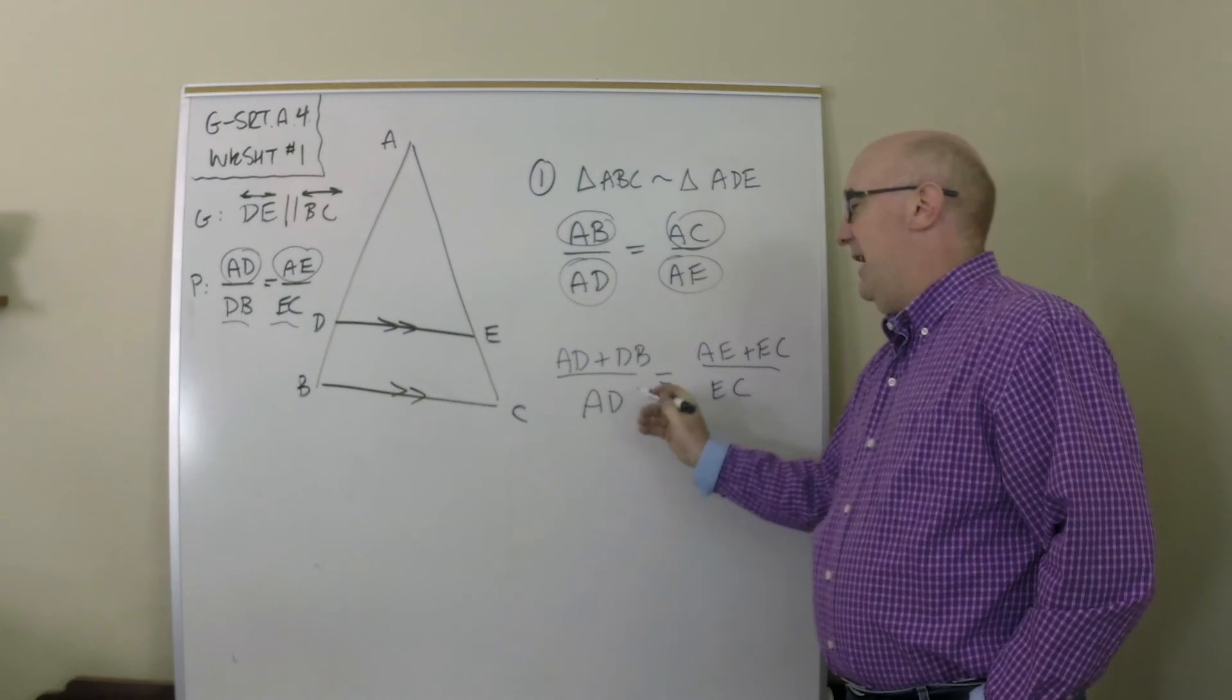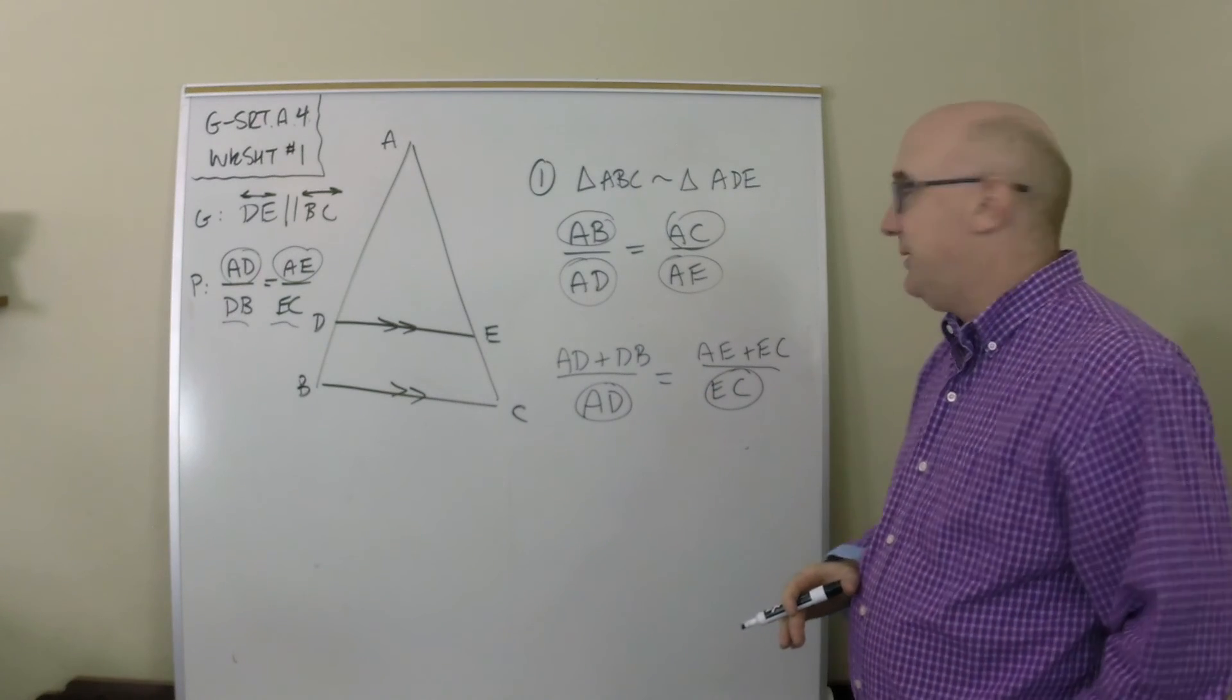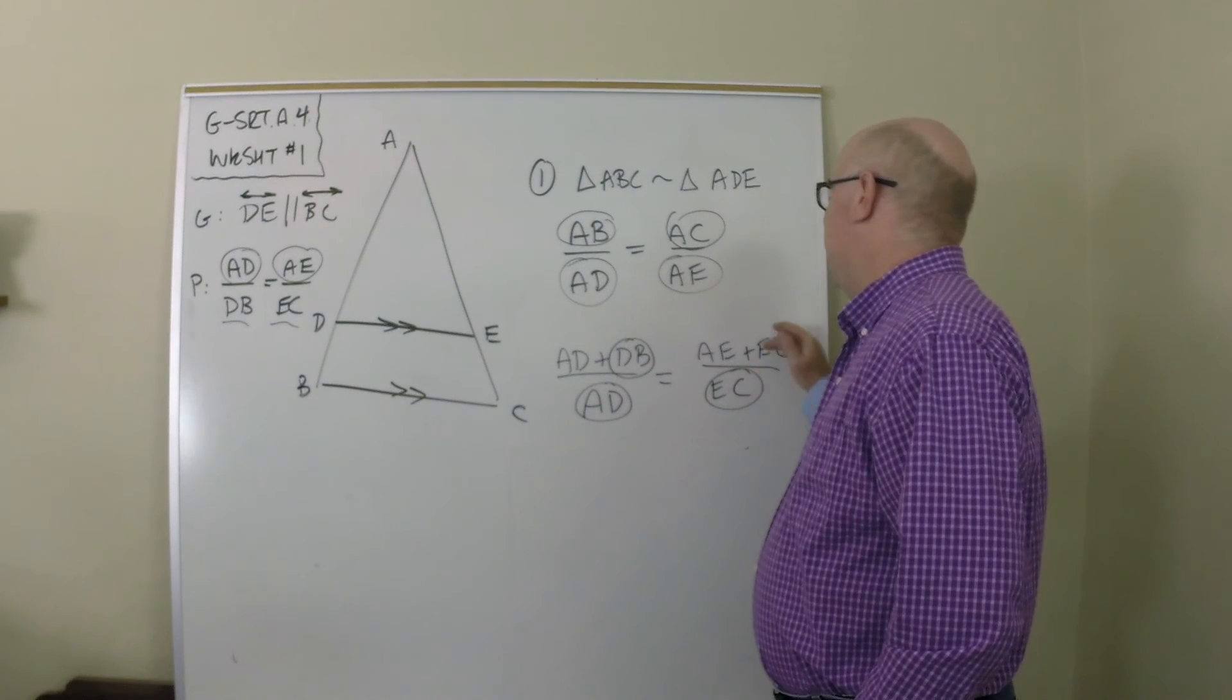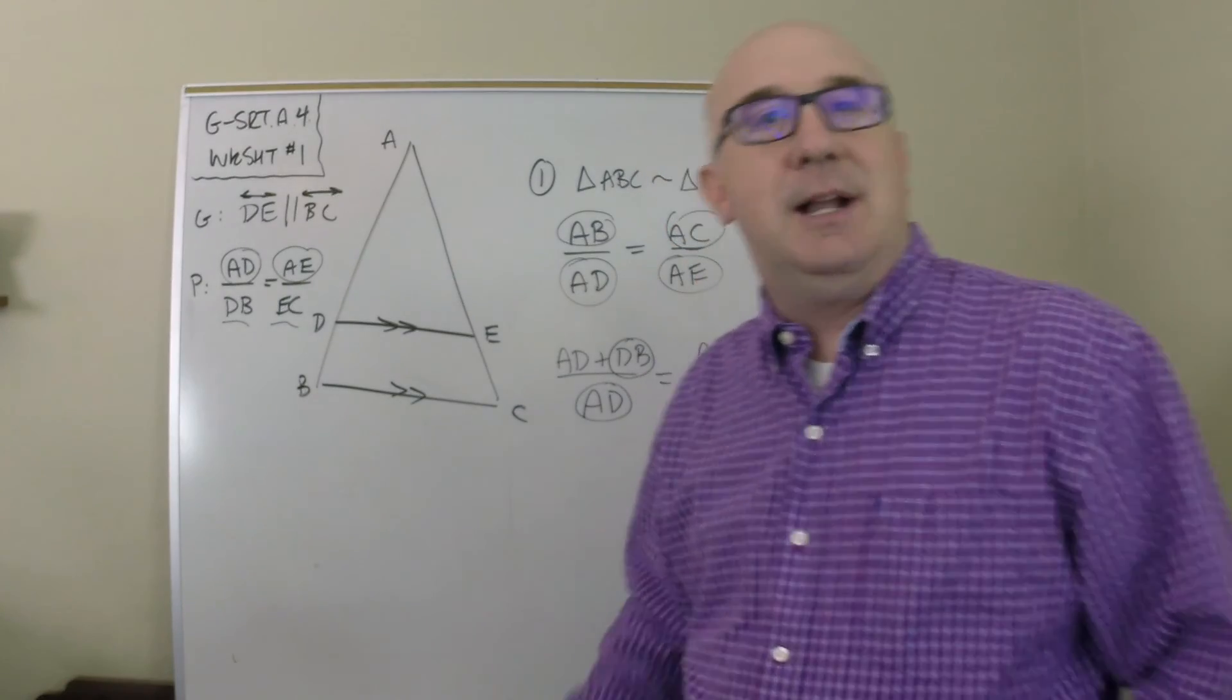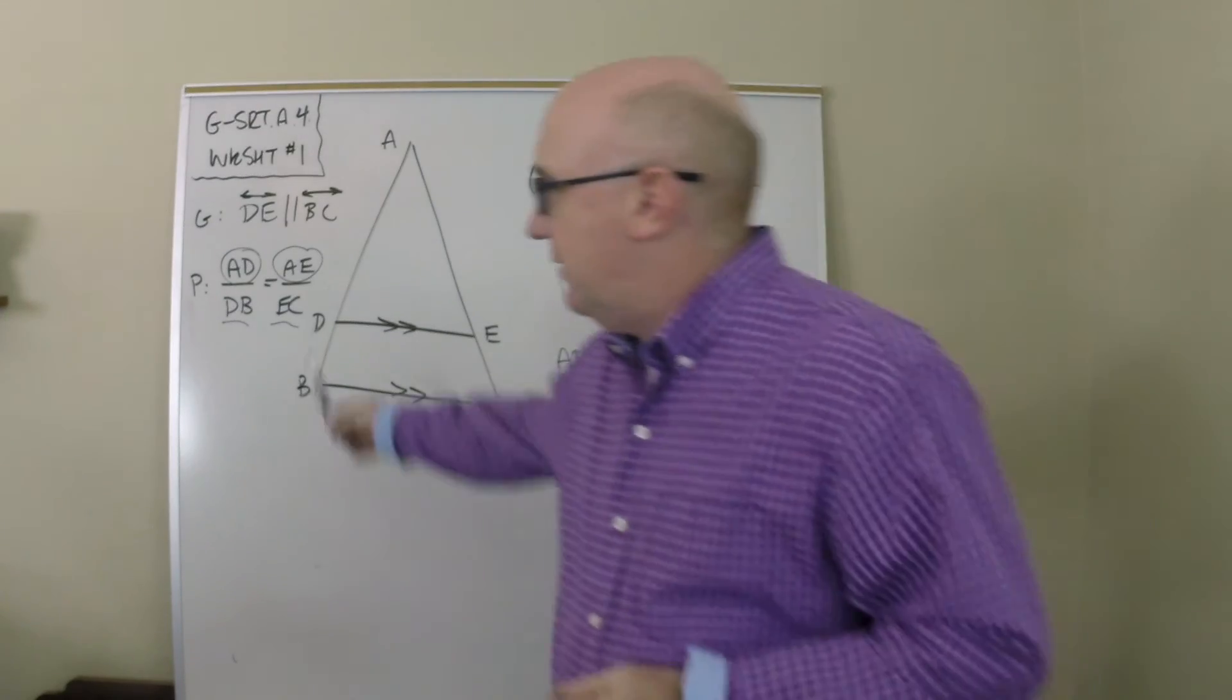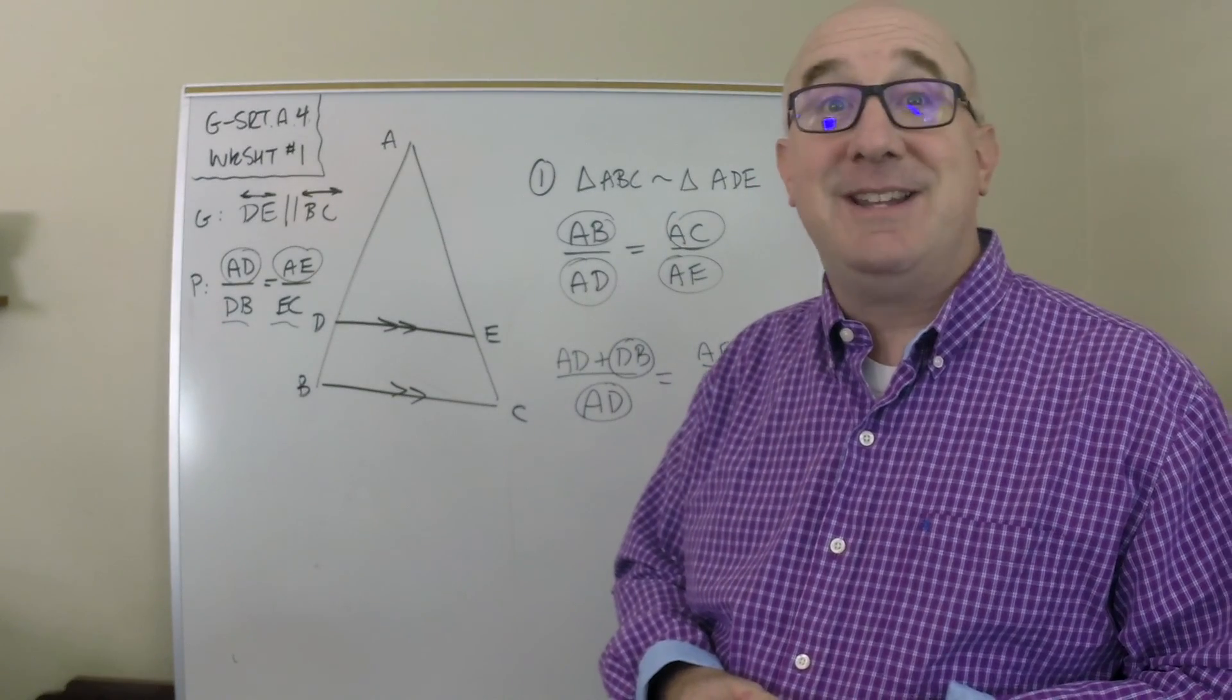So we still have our AD which we want, we still have our EC which we want. Guess who just got introduced? DB's introduced and EC's introduced. If you do some cross multiplication, a little simplification, and then put it back in the form of a proportion, you will find this pops out.